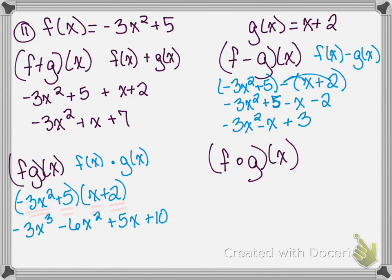The last one is f composed of g, and that circle symbol means composed of. What we are doing is taking g of x and plugging it in for the x in f of x. So we are taking x plus 2 and plugging x plus 2 in for that x. So f composed of g of x means we take x plus 2, which is our g of x, and plug it into the f of x function.